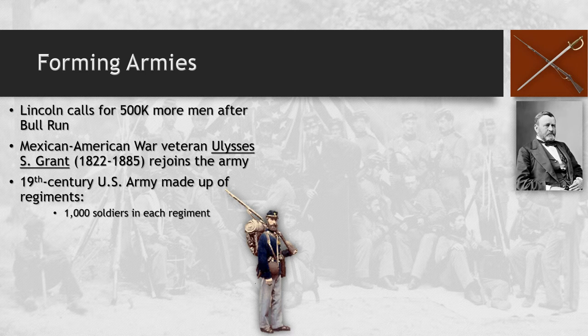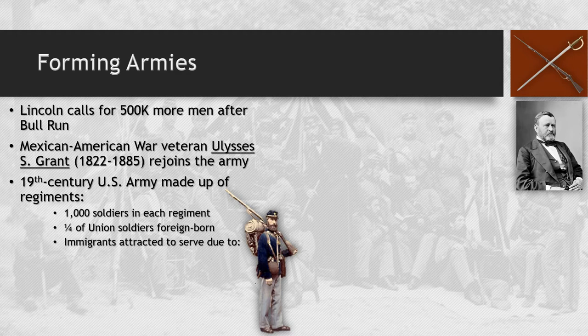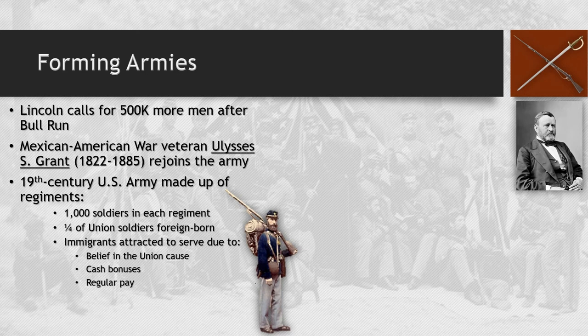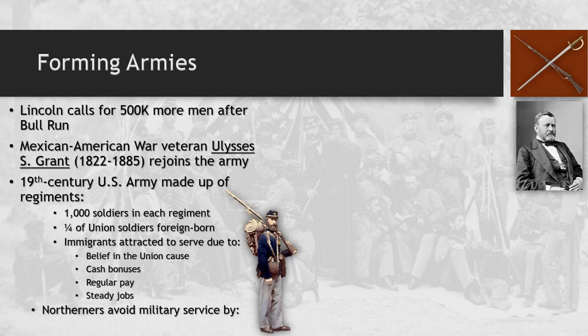The 19th-century U.S. Army is made up of several regiments, each with a thousand soldiers. One fourth of all Union soldiers are actually foreign-born, attracted to service for various reasons: belief in the Union cause, cash bonuses, or simply regular pay, since other jobs were potentially less stable. Many Northerners are also able to avoid military service by holding federal or state government office, gaining medical or compassionate exemptions, or paying a $300 fine to the government so that someone else can serve in their stead.